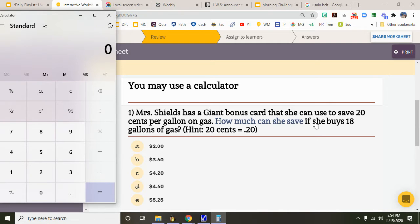Mrs. Shields has a giant bonus card that she can use to save 20 cents per gallon on gas. How much can she save if she buys 18 gallons of gas? Well, she's gonna save 20 cents 18 times.